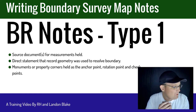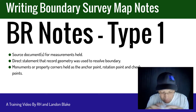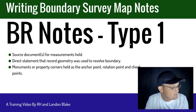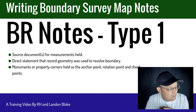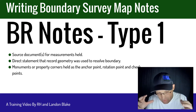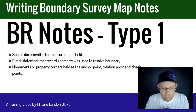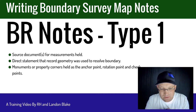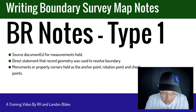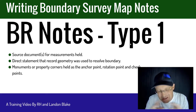Let's talk about what goes into a type 1 note. There are three elements: the source document for the measurements we're holding in the boundary resolution; a direct statement that we held the record geometry when we resolved the boundary; and then what monument or property corner we held as the anchor point, the rotation point, and what points we used to check that boundary resolution. In this situation we have a parcel shown on a parcel map, we go out and find the monuments at the corners, compare that to the record measurements. If the record measurements fall within the error bubble of the survey, I will typically go ahead and hold record.